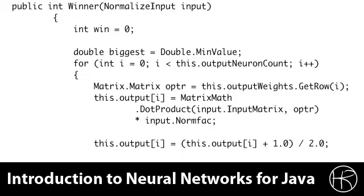To do this, we create a double called 'biggest' that is going to hold the biggest activation value. We initialize it to the minimum value allowed by a double so that almost any value is going to be bigger than it, causing it to get initialized the first time through the loop. We loop over the output neuron count and obtain a row matrix for the inputs. We then use matrix mathematics to perform a dot product, which is the usual way to find the output for a neural network. We multiply the dot product by the normalization factor specified in the normalization input, normalizing the output from the neuron as well.